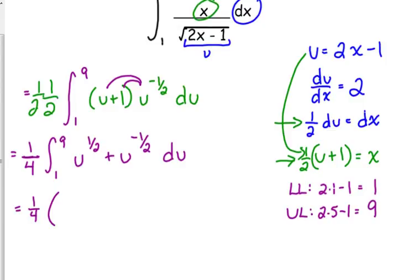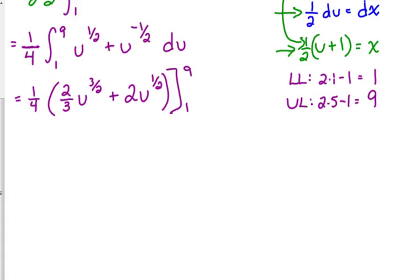Let's integrate. Add 1 to the exponent. U to the 3 halves. Divide by the new exponent. So, that becomes multiplying by 2 thirds. Add 1 to my exponent. U to the 1 half. Divide by 1 half. That becomes multiplying by 2. I'm going to evaluate from 1 to 9. Again, I don't have to plug my u back in because I changed my limits. So, this is actually a lot shorter than what we did earlier today because we do not have to worry about all that factoring. We've just got to crunch the numbers at this point.